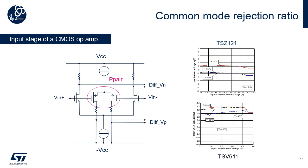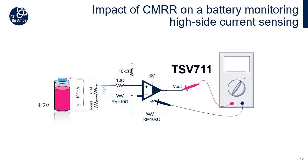As seen previously, the mismatch between two NMOS or two PMOS is responsible for the VIO, but there is no link between the mismatch of the NMOS and the mismatch of the PMOS. This means each pair will generate its own VIO. So, depending on the common mode voltage used in the application, the VIO might be different. In a precision environment, the main goal is to achieve the lowest VIO jump when the signal switches from one pair to another.